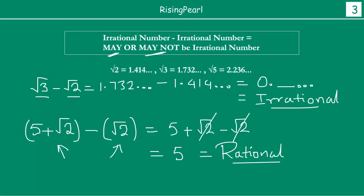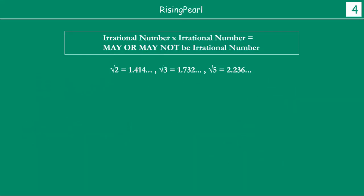Let's talk about what happens when we multiply irrational numbers. Interestingly, when we multiply two irrational numbers, we may or may not get an irrational number.